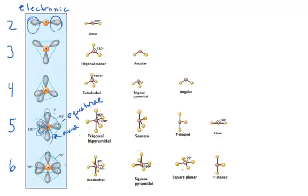In the octahedral situation, where you have six regions of high electron density, all angles between all regions of electron density are 90 degrees.